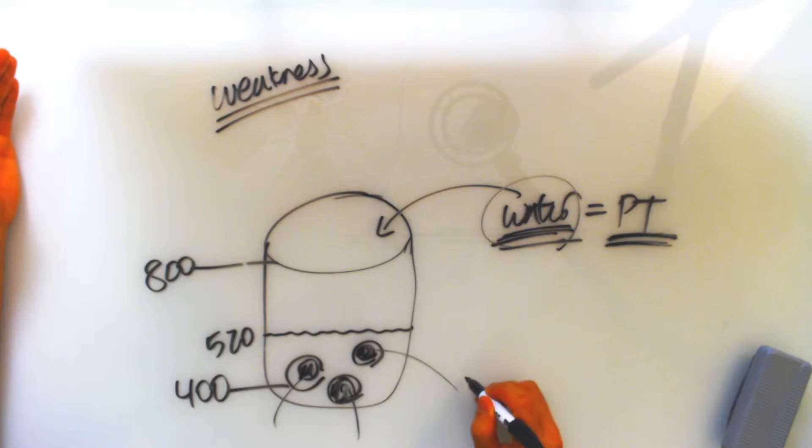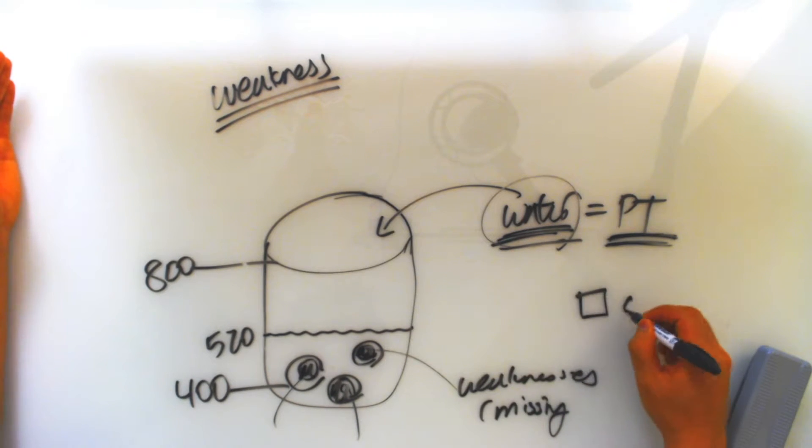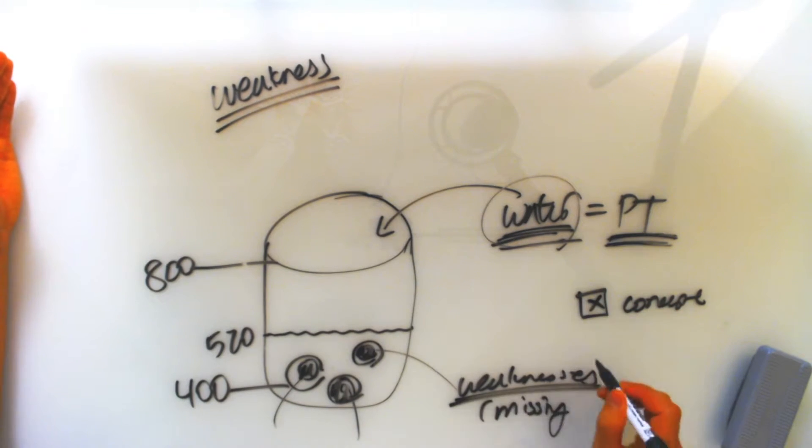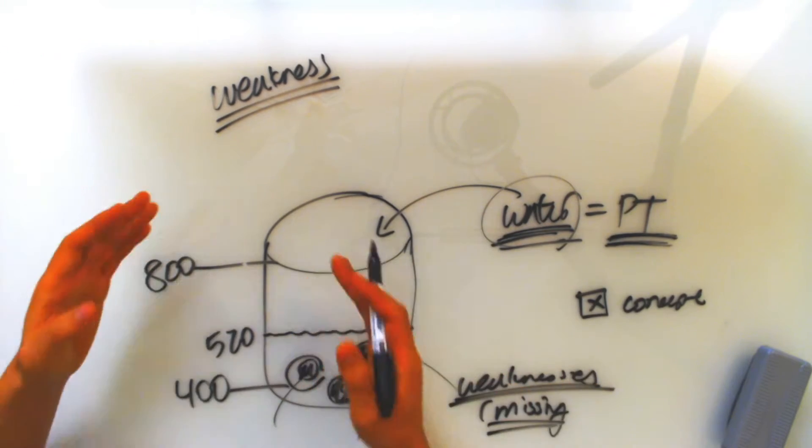So what are these holes? Well, these holes are known as your weaknesses, right? So these holes are where you are missing the questions. And as we all know, SAT, each question tests you on certain concept. And if you're getting this concept wrong, that means you're weak on that concept. That's why you are missing the question. But students are not doing too much about it.